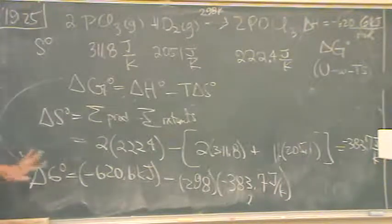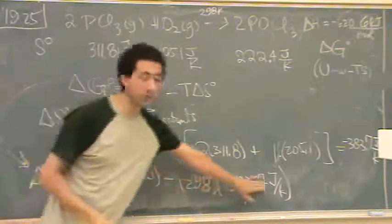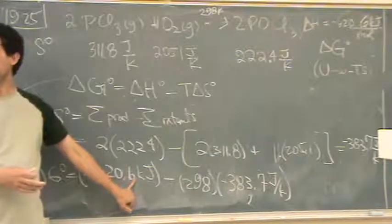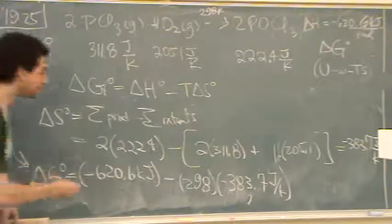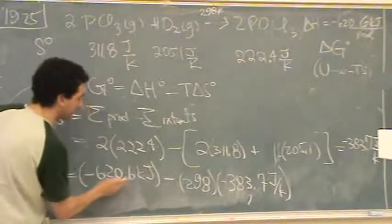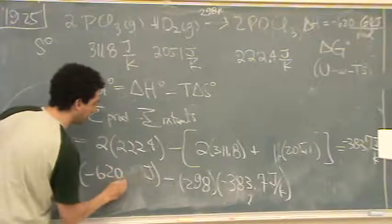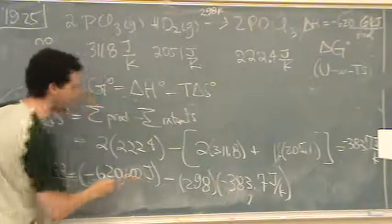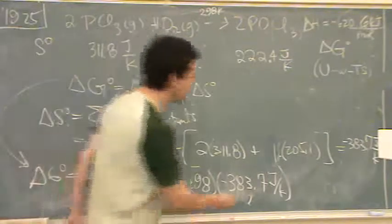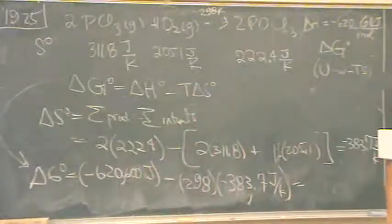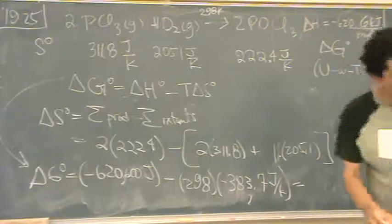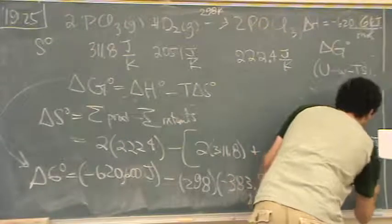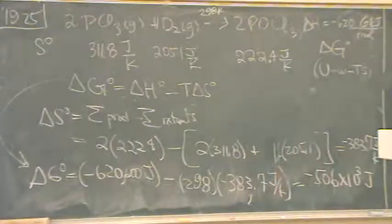You have to have the same units. You've got to have the same units. This is joules. Entropy is almost always going to be in joules. Delta H is almost always going to be in kilojoules. So, you always have to do that conversion. So, basically, this front number, I have to change to joules, which is just multiplied by 1,000. So, I'll just go minus 620,600 joules. And this is going to turn out to be minus 506 times 10 to the 3. Or, if you want, minus 506 kilojoules.